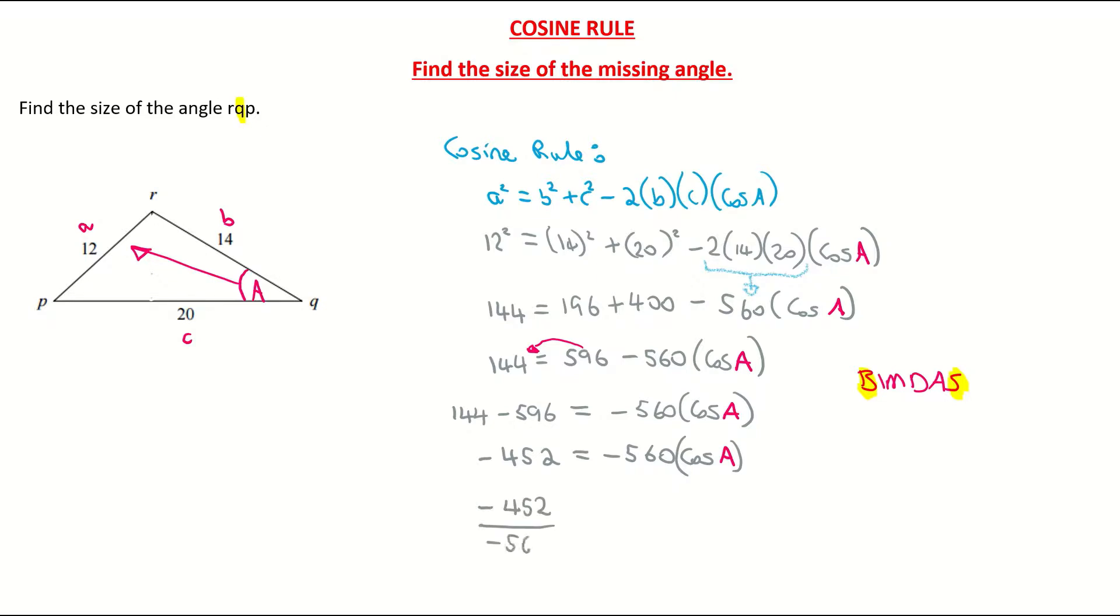If I do minus divided by minus, I get a positive. And I'm just going to write that as a decimal. So if you go to your calculator and go -452 divided by -560, you get 0.807. So 0.807, I'm going to three decimal places, which is equal to cos of my angle.